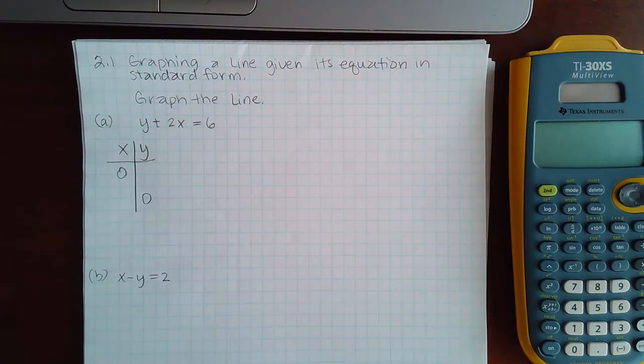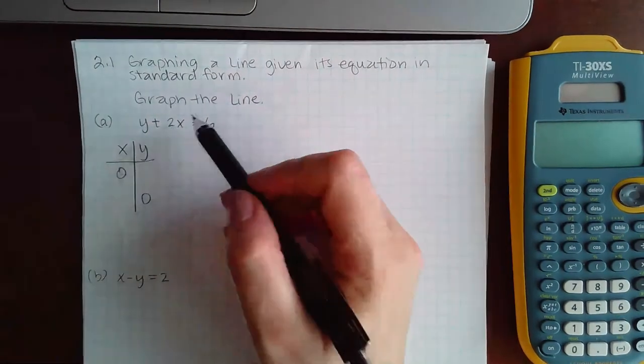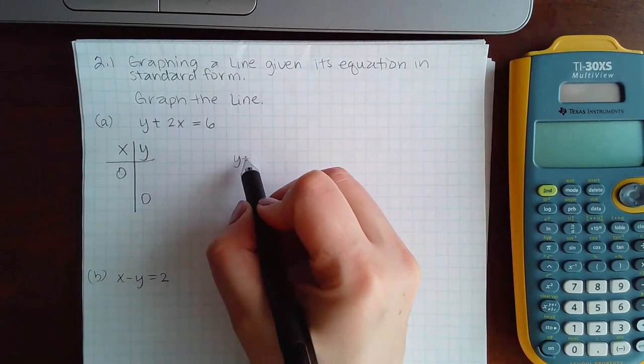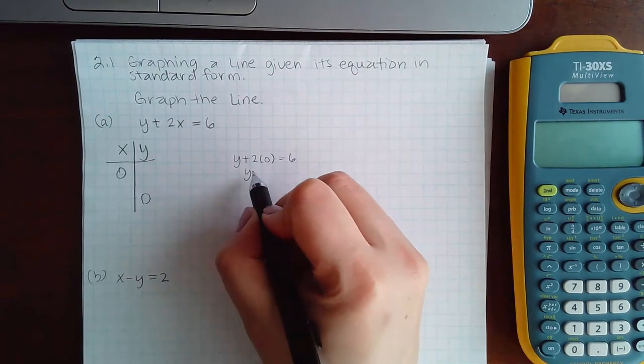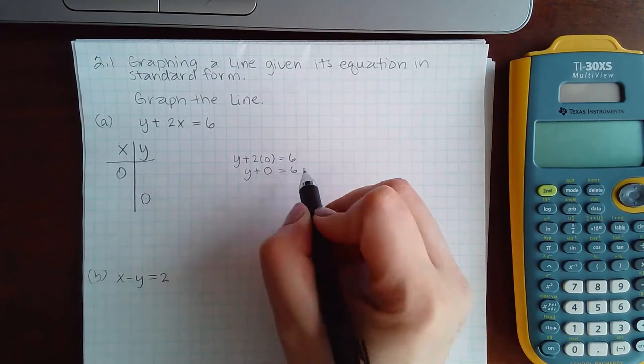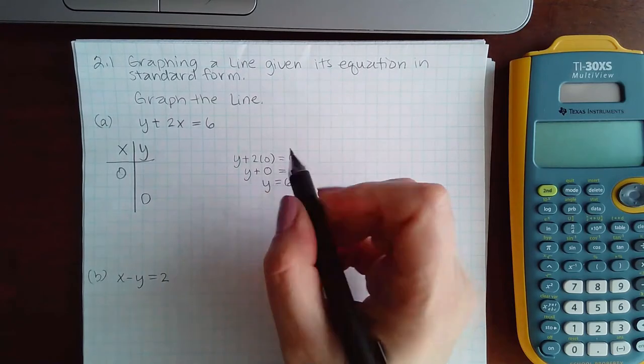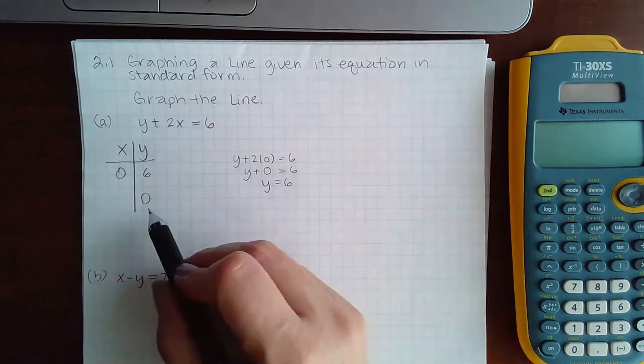Okay, so when I plug in 0 for x it becomes y plus 2 times 0 equals 6, which becomes y plus 0 equals 6 or just y equals 6.